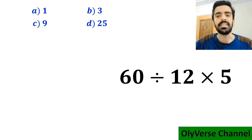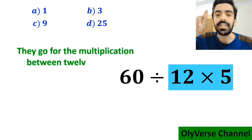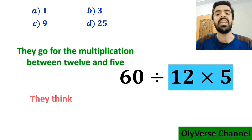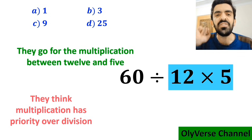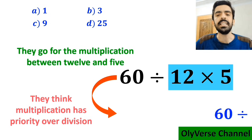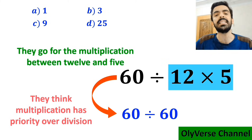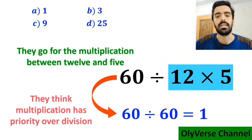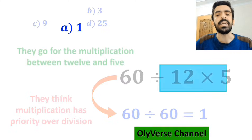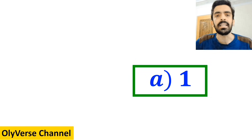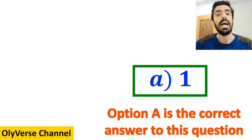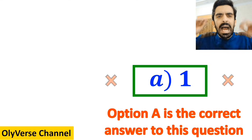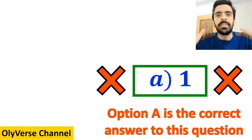In the next step, they go for the multiplication between 12 and 5, because they think multiplication has priority over division. So this expression simplifies to 60 divided by 60, which finally gives them the answer 1. They quickly say that option A is the correct answer to this question. However, this answer is absolutely wrong.